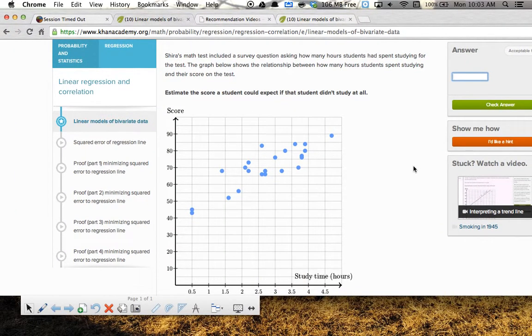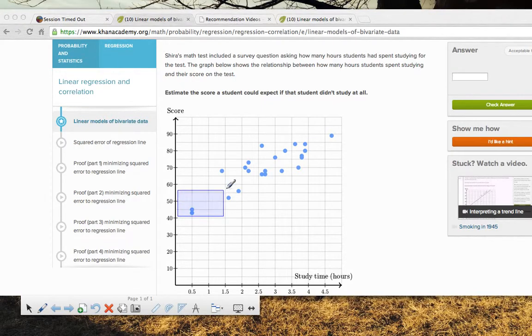So let's look at Shira's math test, which included a survey question asking how many hours students had spent studying for the test. The graph below shows the relationship between how many hours students spent studying and their score on the test. So when we're looking at this, I would really suggest you can use the scratch pad, but your iPads will allow you to write in Expo marker. Expo marker is pretty nice for these. You can draw right onto the screen. The first thing I'm going to do is I'm going to place the line of best fit.